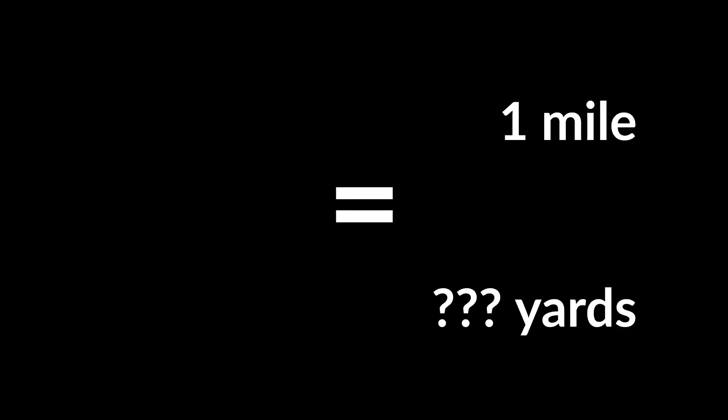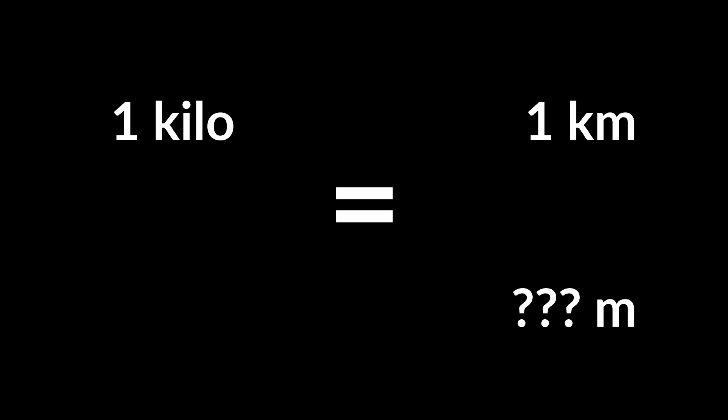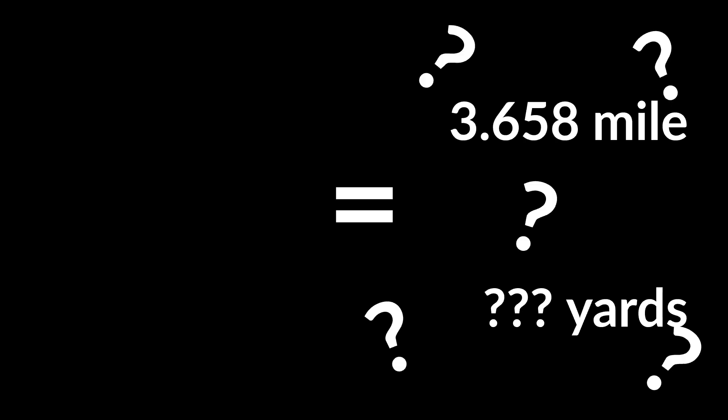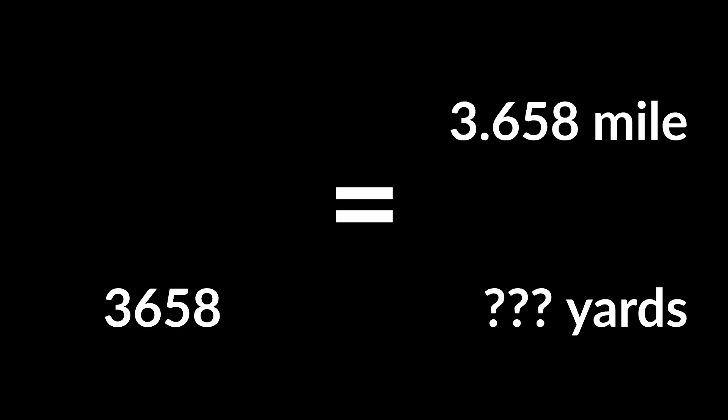Now I want to show you with examples why SI prefixes are superior. How many yards are in a mile? One thousand seven hundred and sixty yards. How many meters are in a kilometer? One thousand — because kilo means one thousand. Easy enough. But how many yards are in 3.658 miles? While you figure that out, I'll tell you there are three thousand six hundred and fifty-eight meters in 3.658 kilometers.